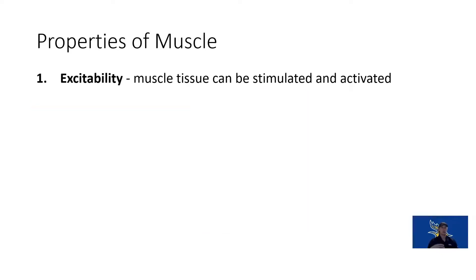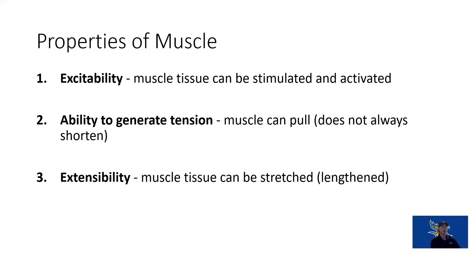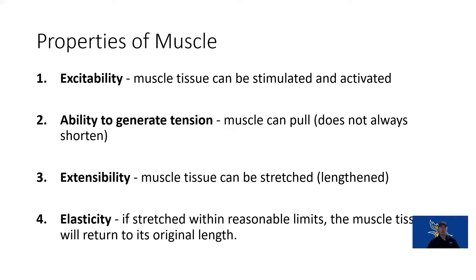Muscles are excitable, meaning they can be stimulated through electrical impulses from our nervous system or from external electrical impulses. They have the ability to create tension — to pull — because they shorten. A muscle always tries to shorten or pull; we can't push with a muscle, we can only pull. Muscles can also be stretched, especially the connective tissue, and can return back to their original length. When we stretch within reasonable limits, that muscle will return to the length it was before.